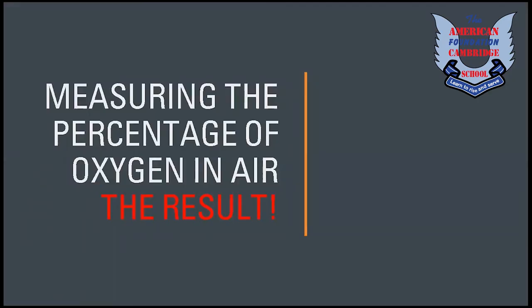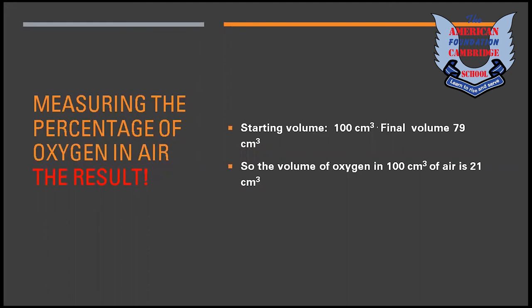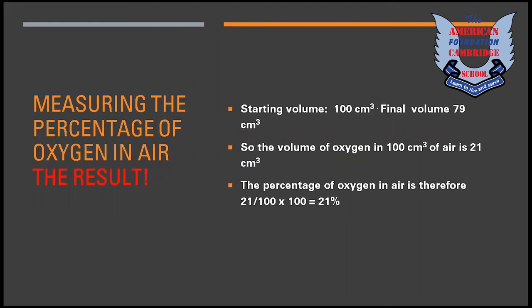The result of this experiment: the starting volume was 100 cm³ and the final volume was 79 cm³. So the volume of oxygen in 100 cm³ of air is 21 cm³, and the percentage of oxygen in air is 21 percent. You divide 21 by 100 and multiply by 100 to get 21 percent. You can do this yourself with a calculator or manually.